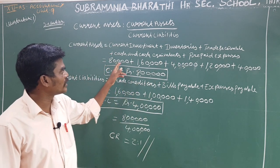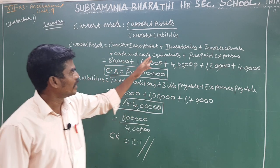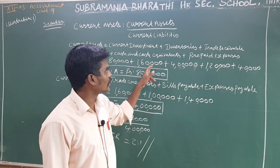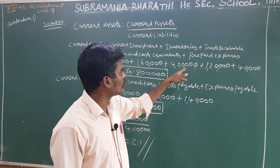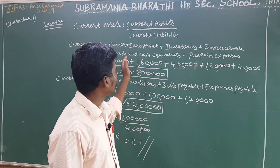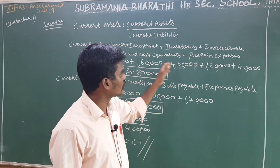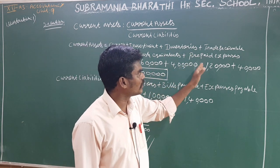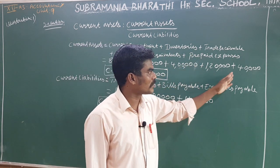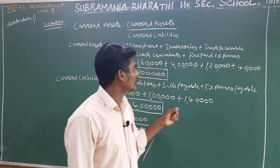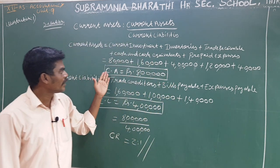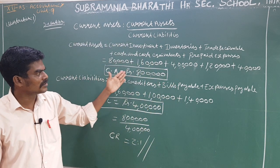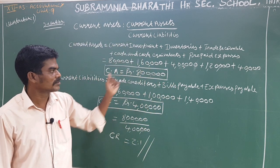Current investment is 80,000; inventory is 1,60,000; trade receivable is 4,00,000; cash and cash equivalent is 1,20,000; prepaid expense is 40,000. Total current assets equal 8,00,000.